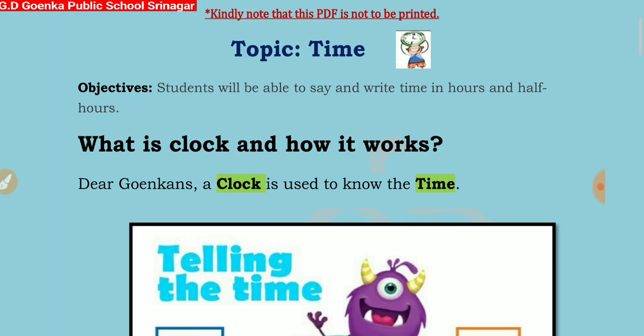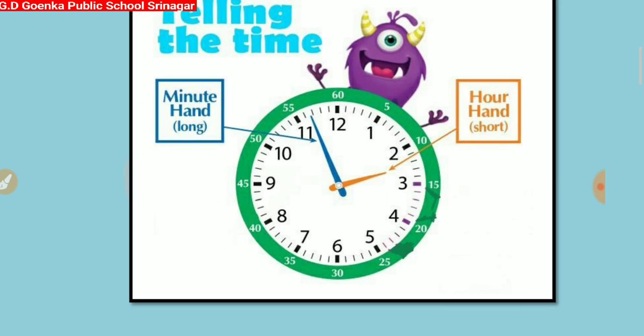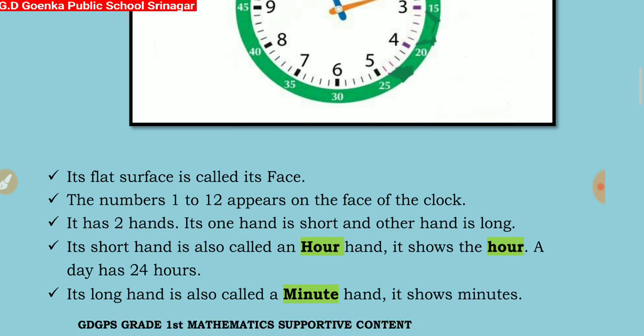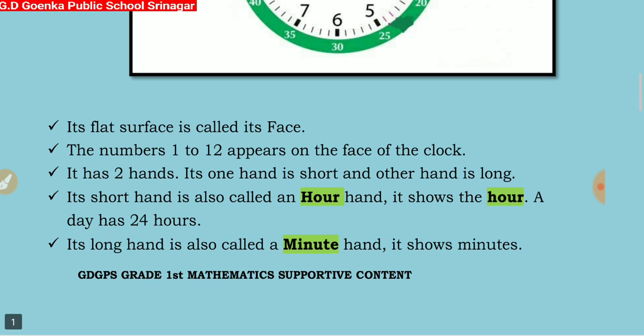A clock is a device that is used to know the time. A clock has a flat surface which is called its face. The numbers from 1 to 12 appear on the face of the clock. It has two hands — one hand is short and the other hand is long.